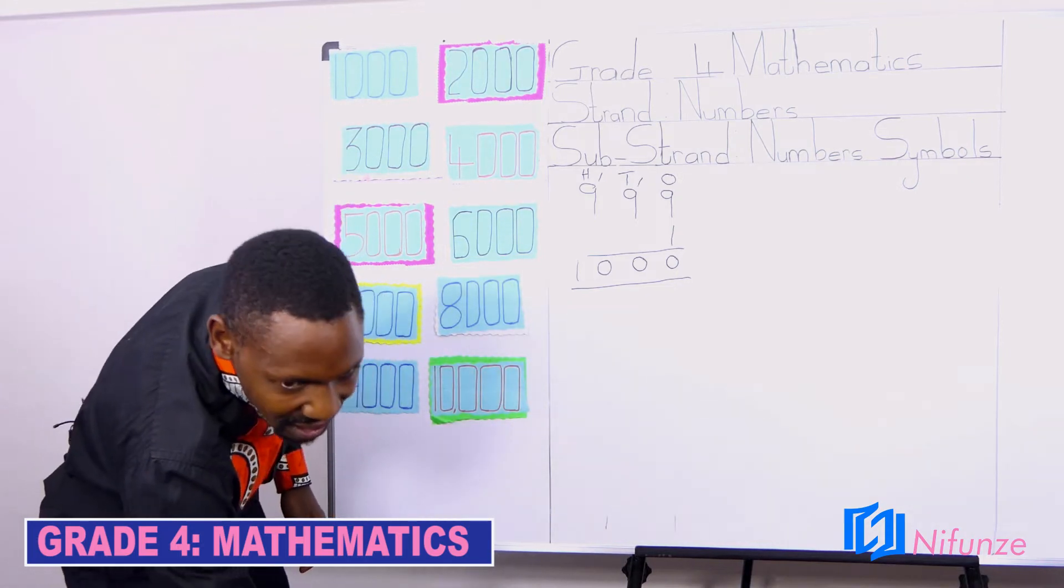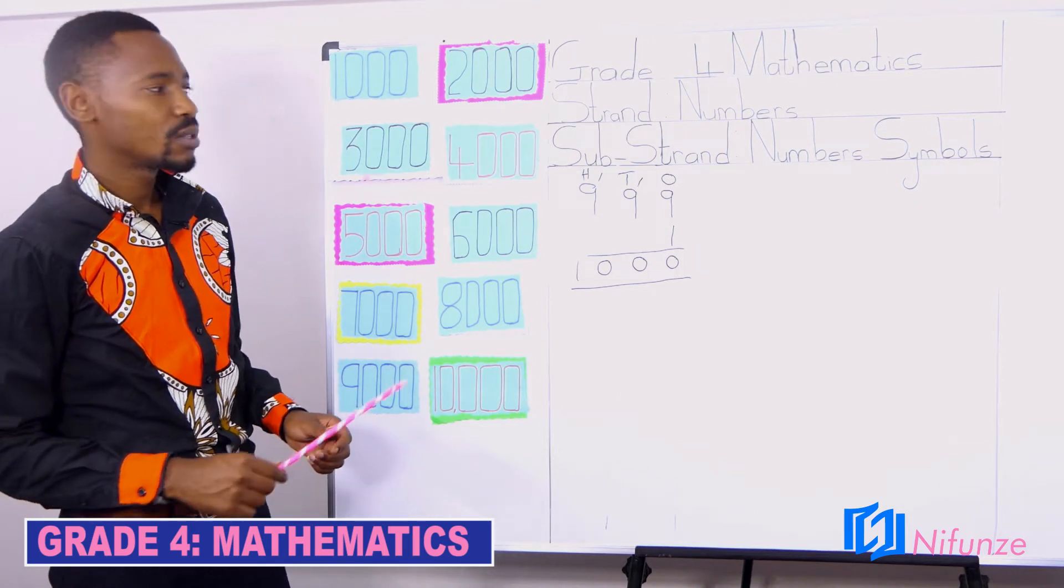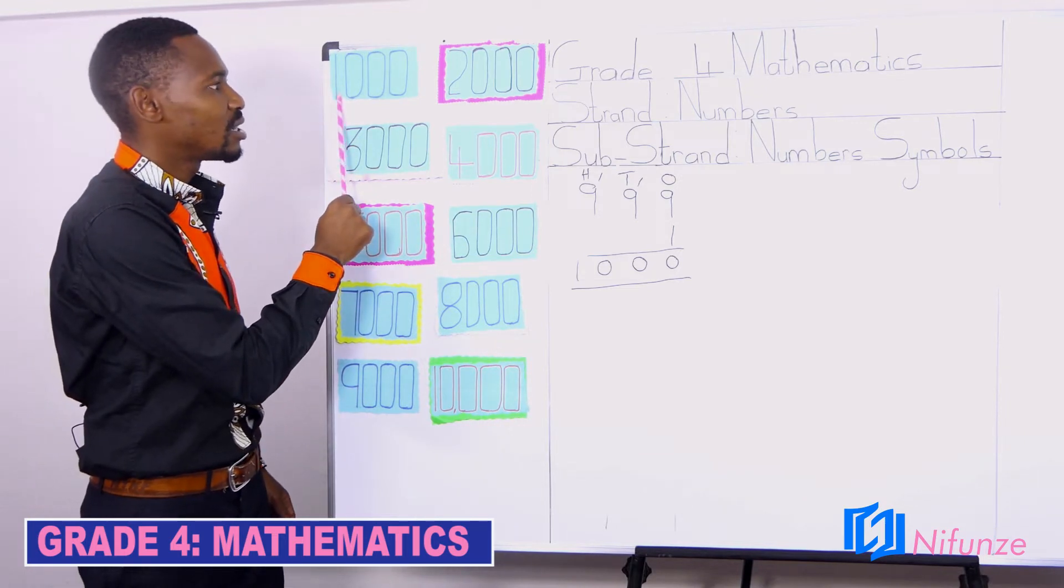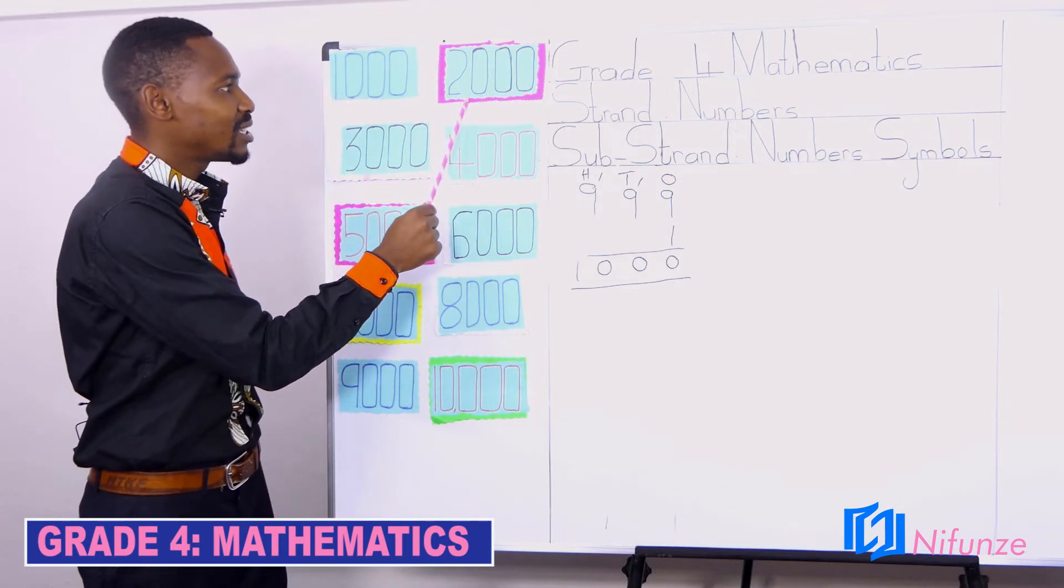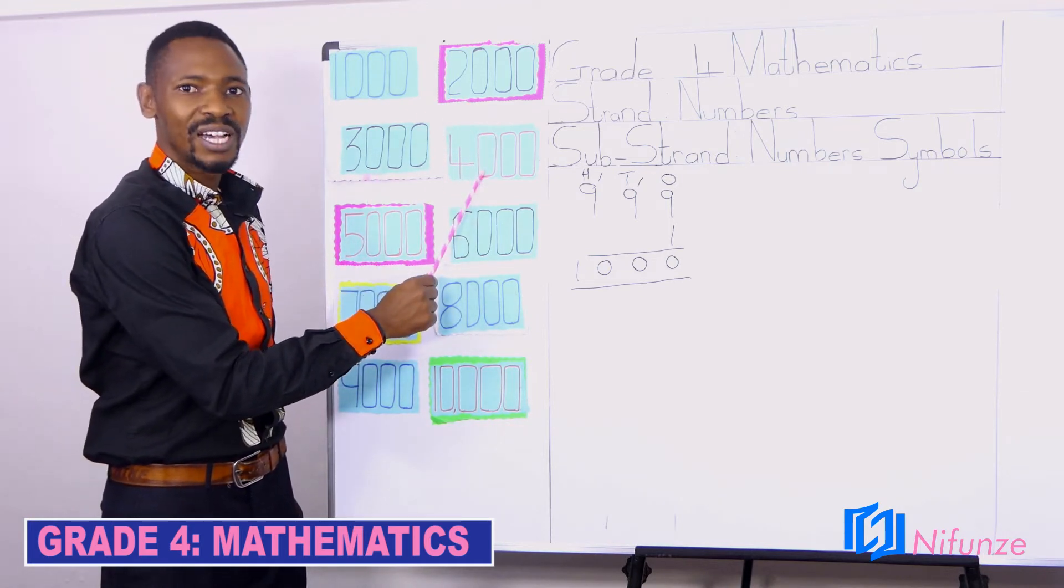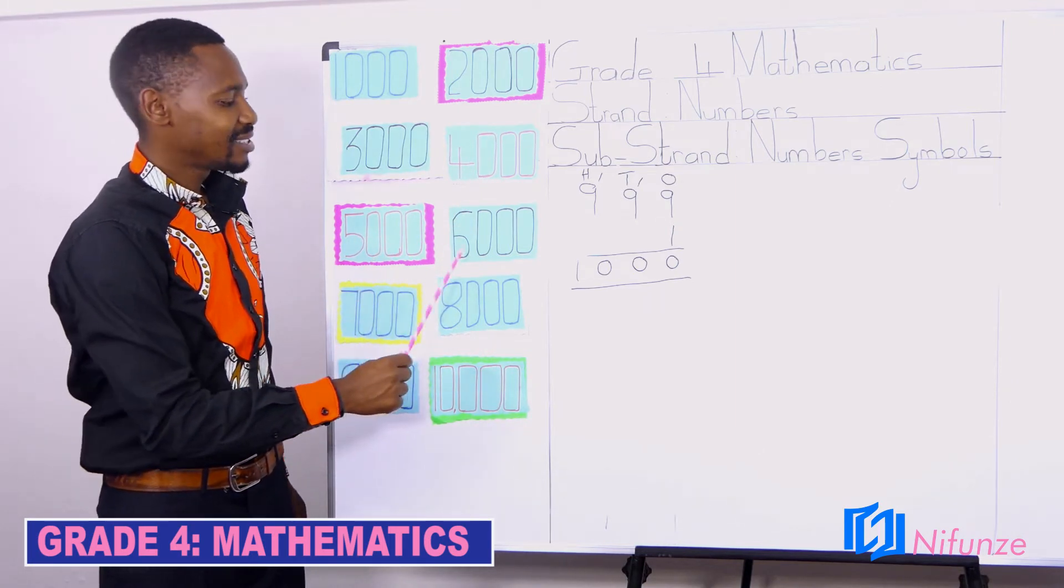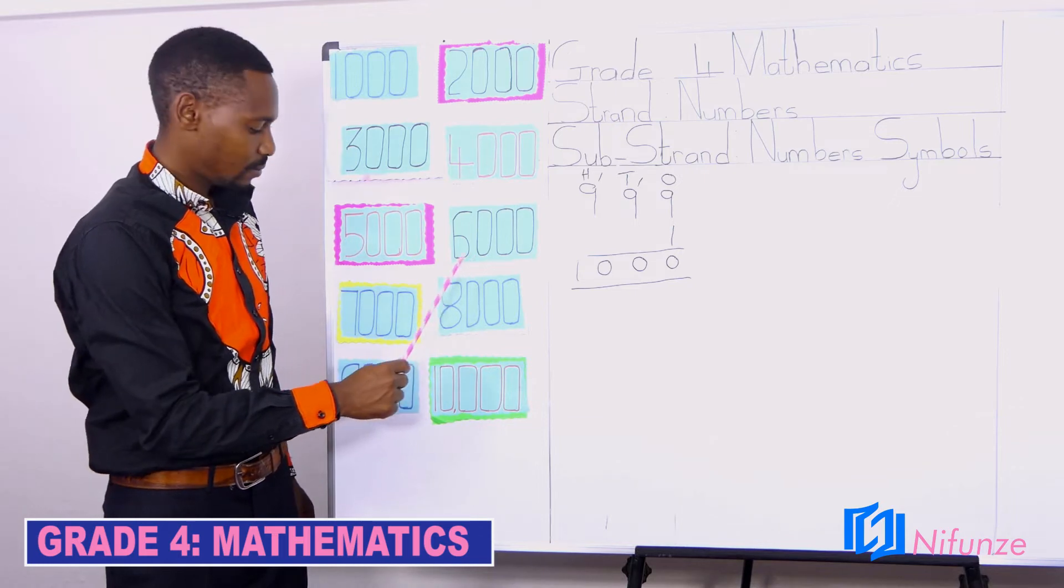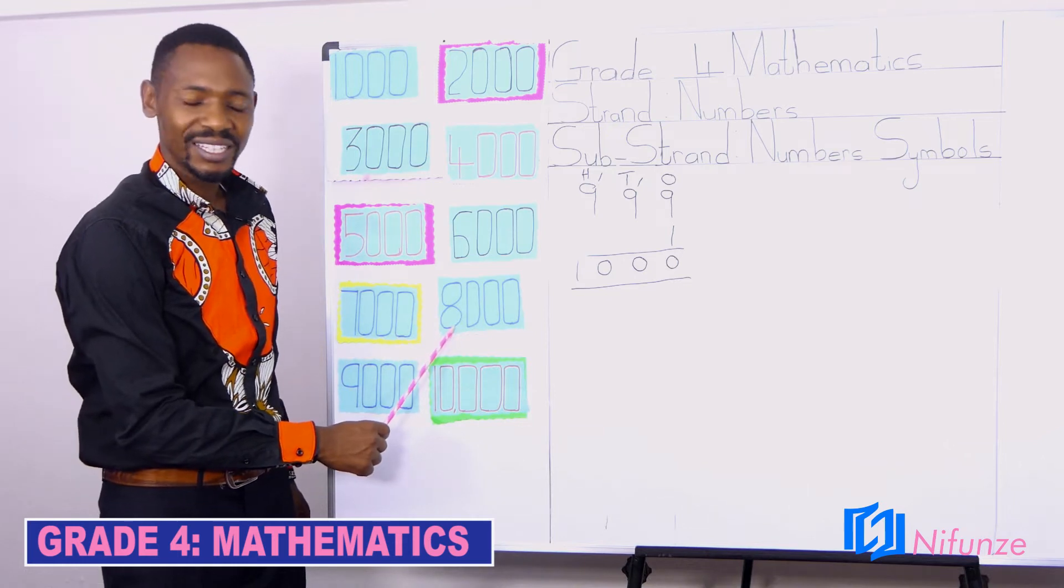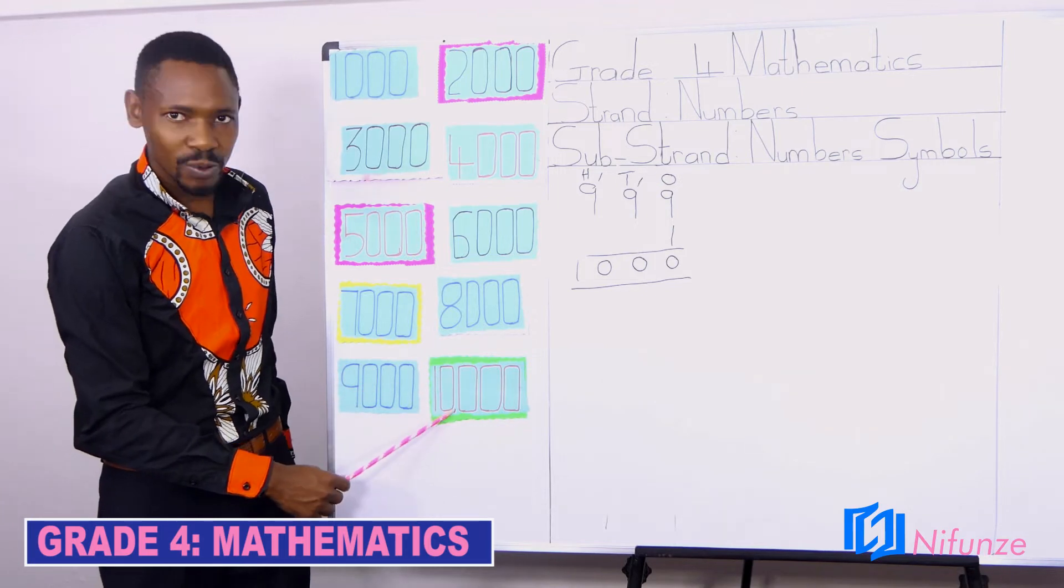So, let us read them in terms of thousands. This is 1,000, 2,000, 3,000, 4,000, 5,000, 6,000, 7,000, 8,000, 9,000, and 10,000.